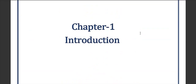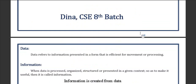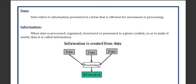Chapter 1 Introduction. Data refers to information present in a form that is efficient for movement or processing. Data is the basic form — for example, the number five can be a roll number or anything else, so this five is data. If you process the data it transforms into information; for example, 'roll number five' is information.